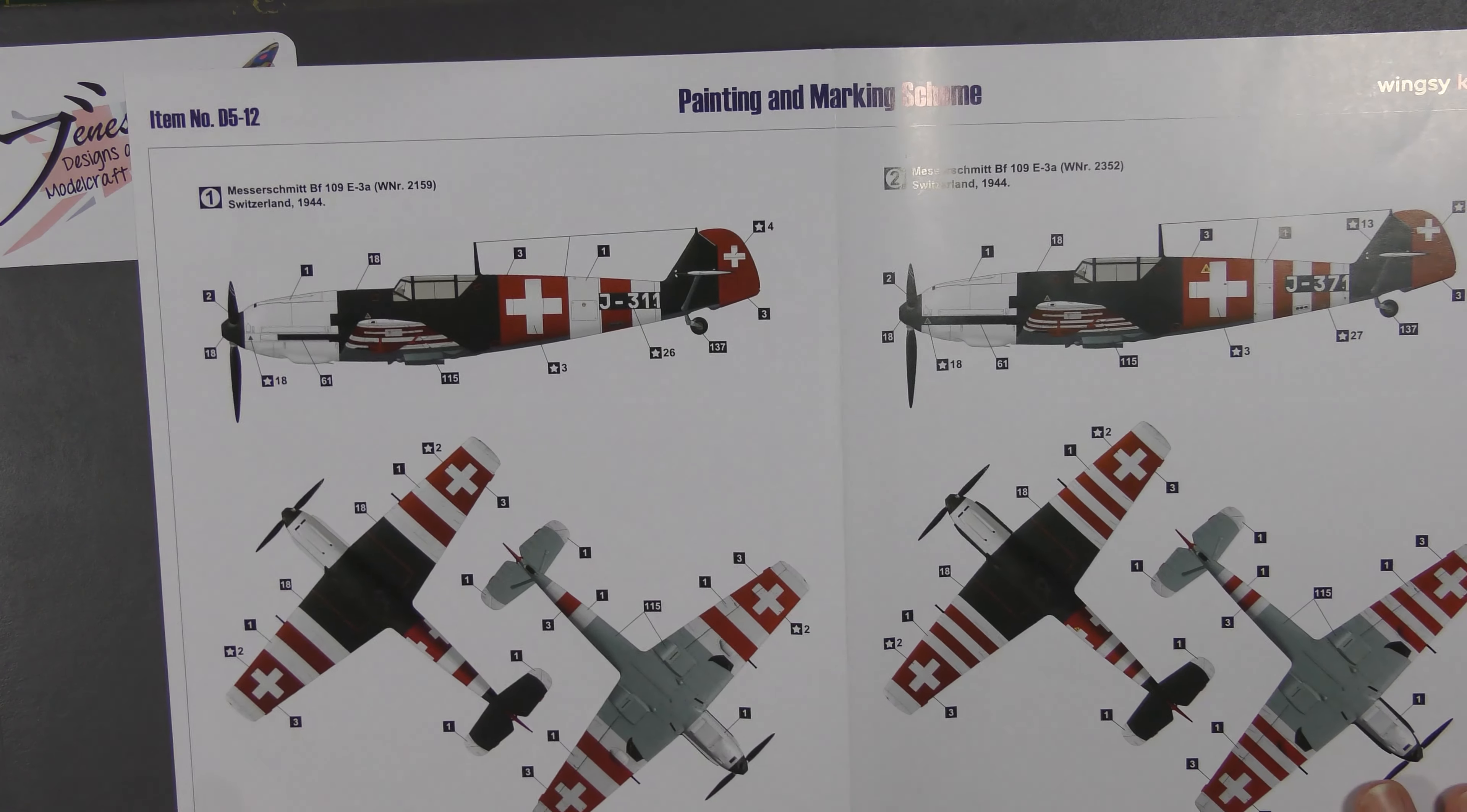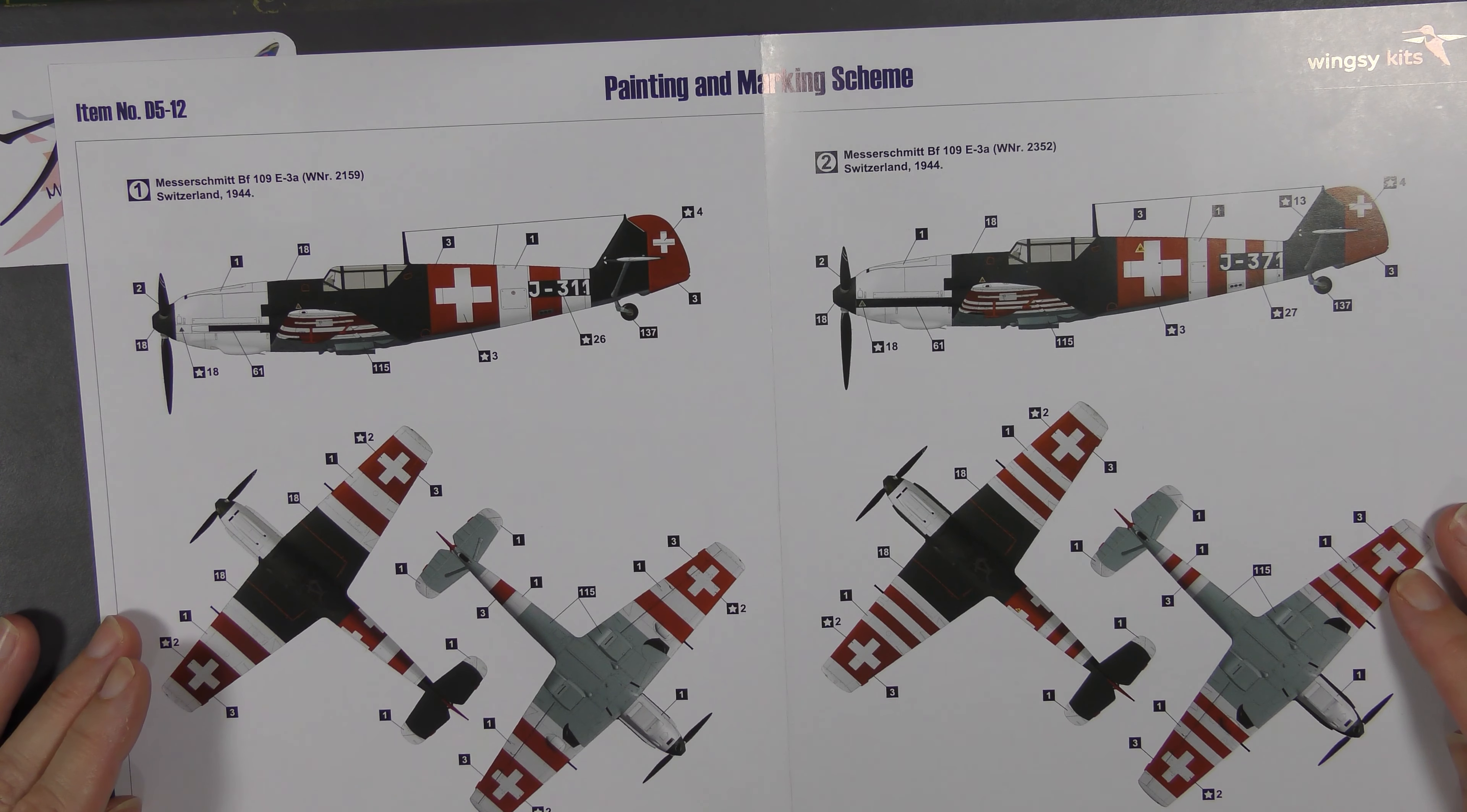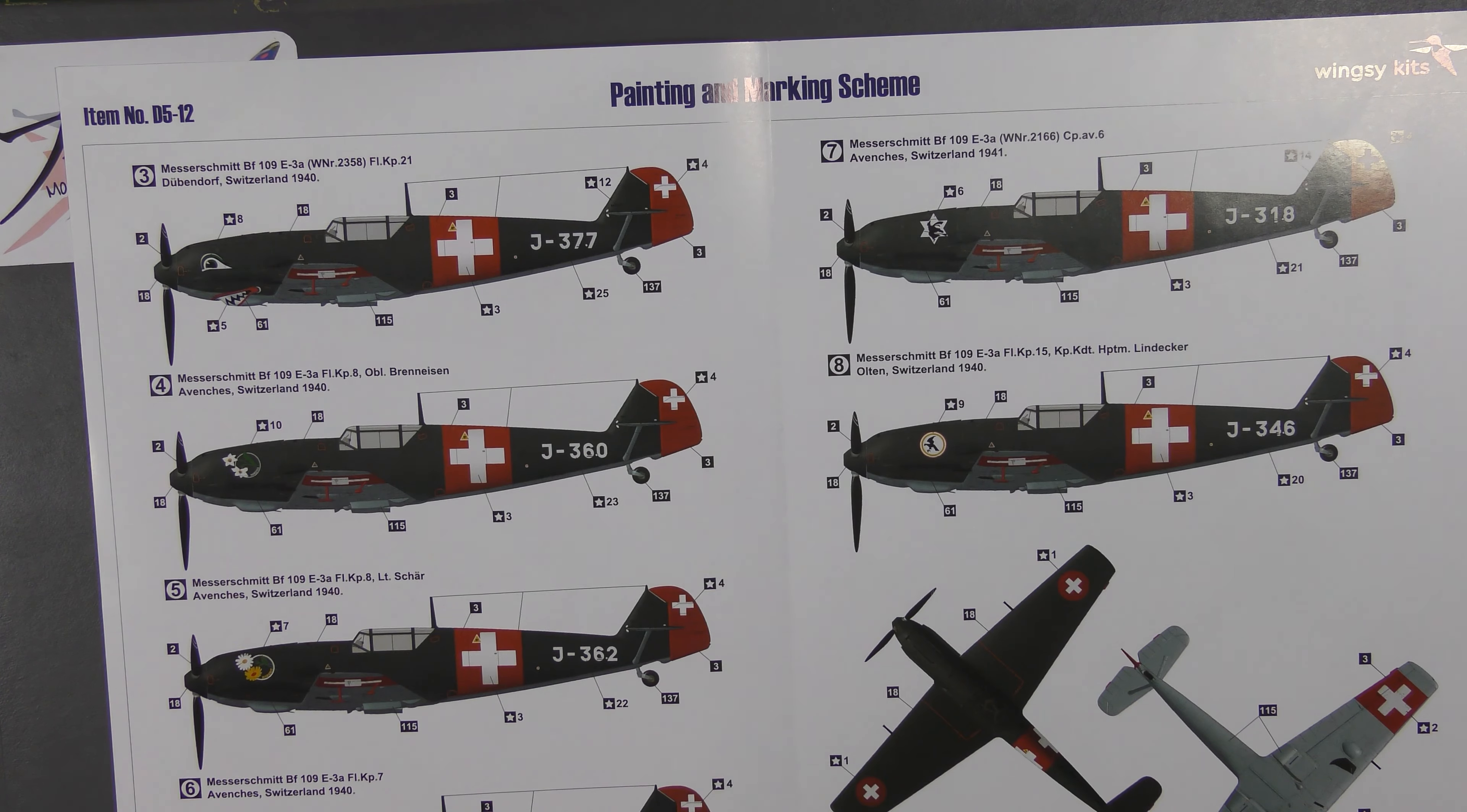One of the biggest draws for this particular one is these paint schemes. We've got this A3 fold-out full-color glossy sheet to detail these schemes. I don't know anything about Swiss 109s except they seem to like very colorful schemes around the time of the war, presumably to aid in not being shot at by anybody. They're calling out the green as RLM 70 on these two with 65 undersides, and you've got these fabulous red and white stripes all over the place. Two different ones here, J311, J371, 1944.